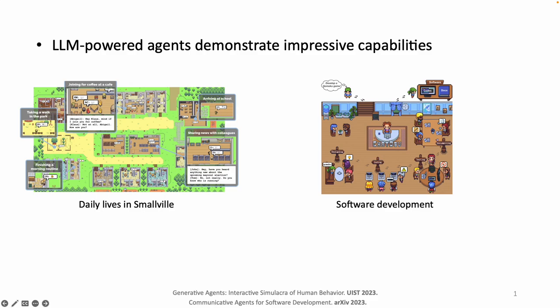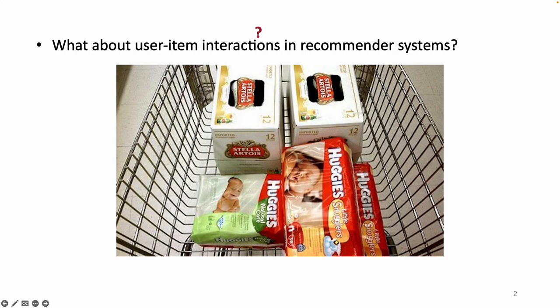With the recent advancement in large language models, ALM-powered agents demonstrated impressive capabilities in autonomous interaction and decision-making. For example, some studies used agents to simulate human daily lives in small villages and developed software.